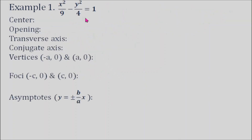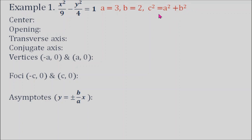Now that we have the standard equation, we complete the information. Our a is 3 (square root of 9) and b is 2 (square root of 4). To find c, we use the formula c² = a² + b². So c equals the square root of 9 plus 4, which is the square root of 13. Our center has coordinates (0, 0).